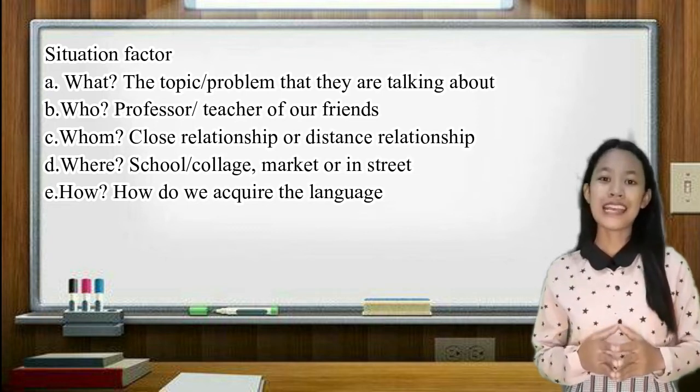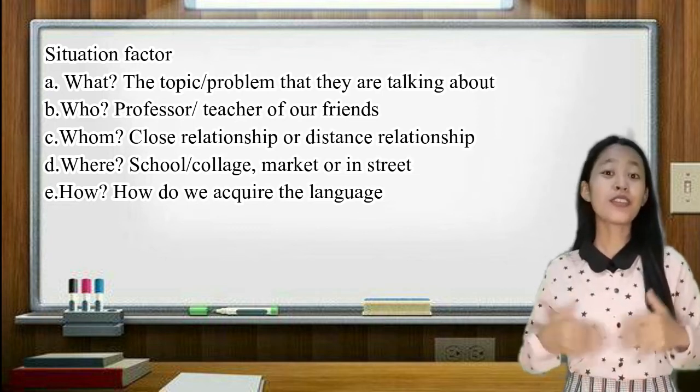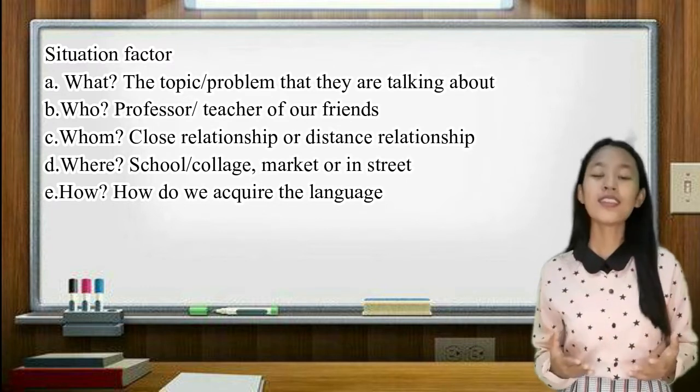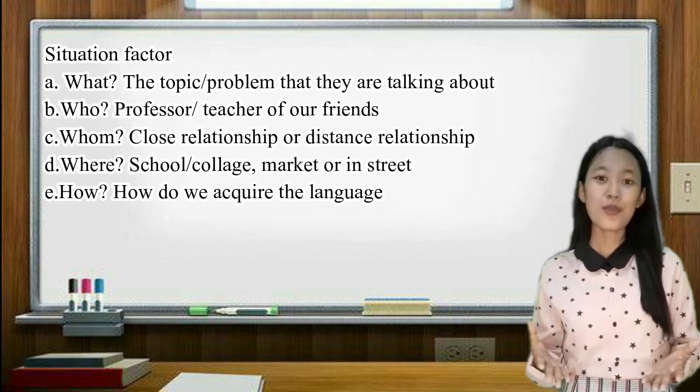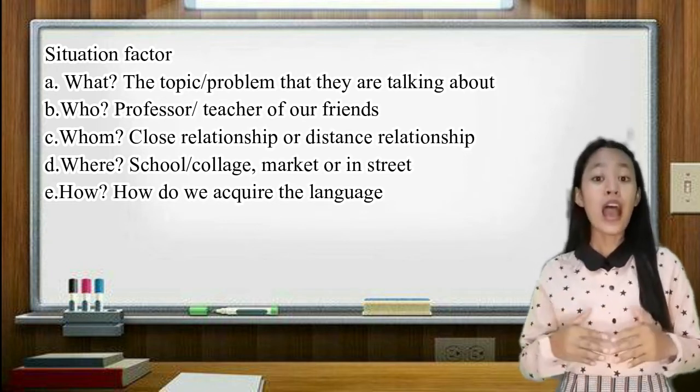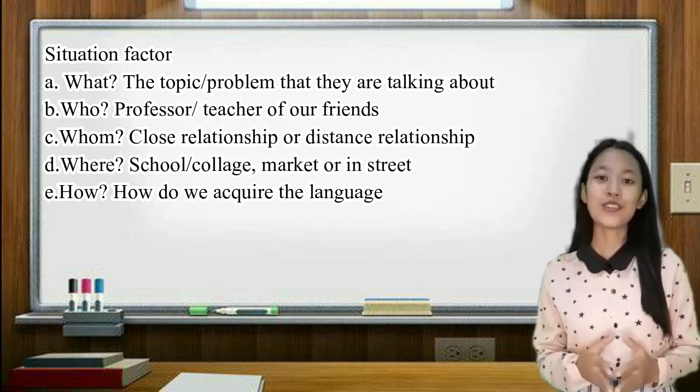The next one is where - we're talking about the location, maybe in a school, in a market, in a college, and maybe sometimes in the street. And the last one is how - how do we acquire a language mixture.